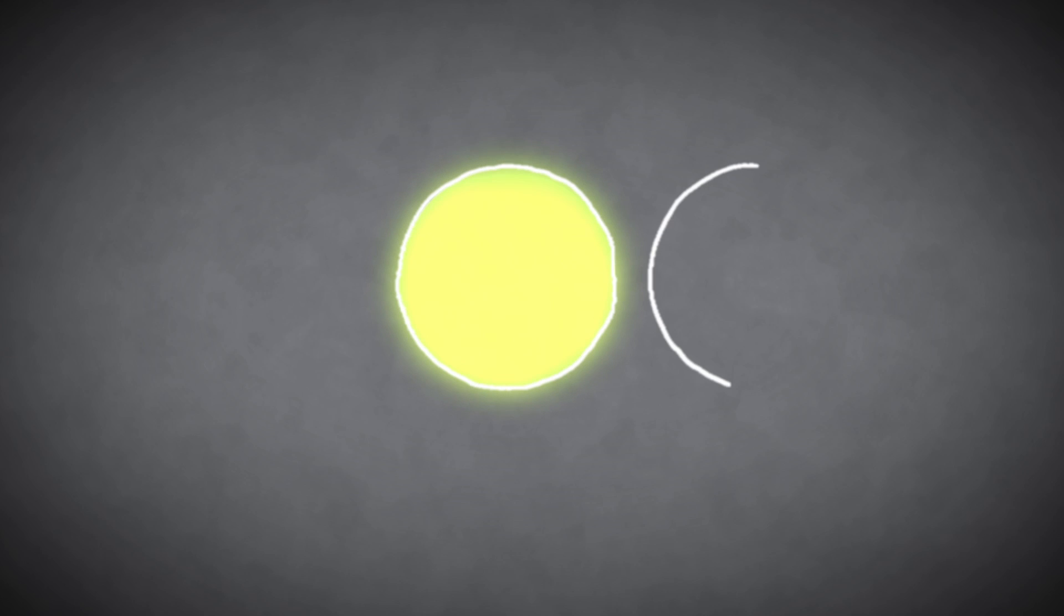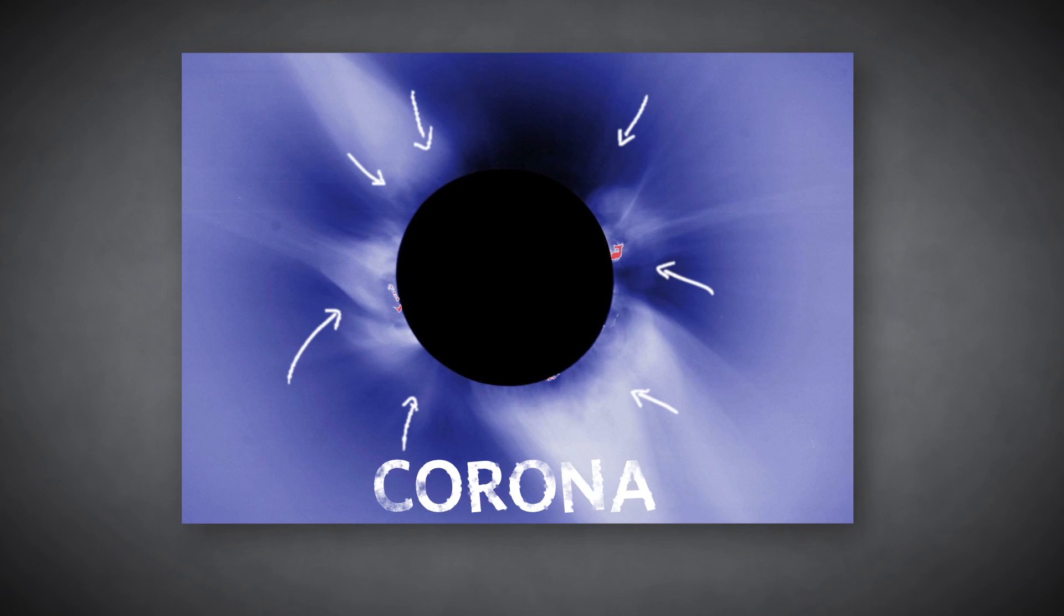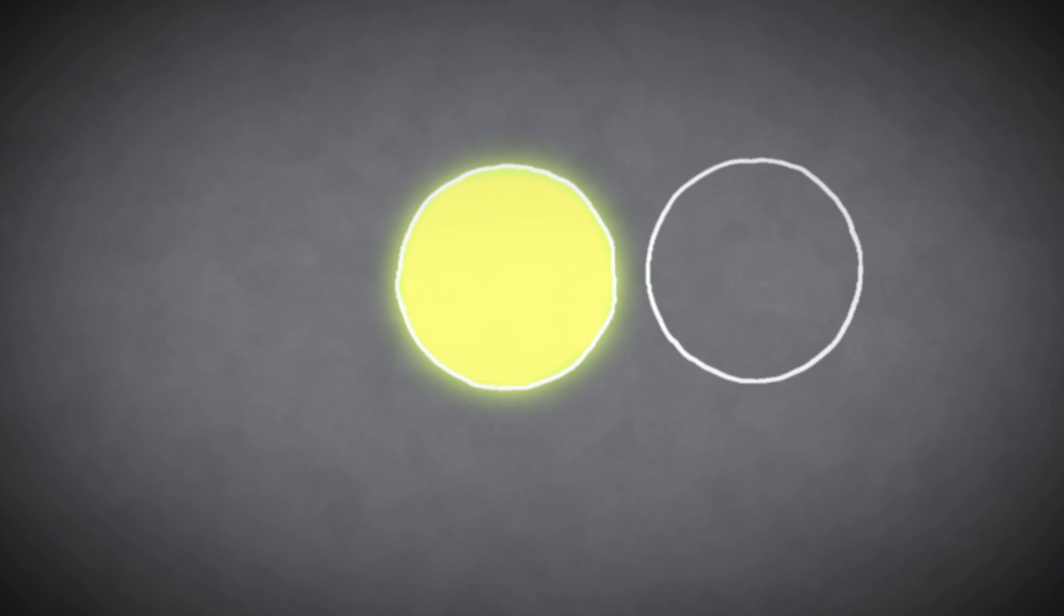During a total solar eclipse, the entire sun is obscured, allowing its pale outer atmosphere, or corona, to be seen. When the moon is a little farther away, appearing slightly smaller, it might not completely block the sun's disk.